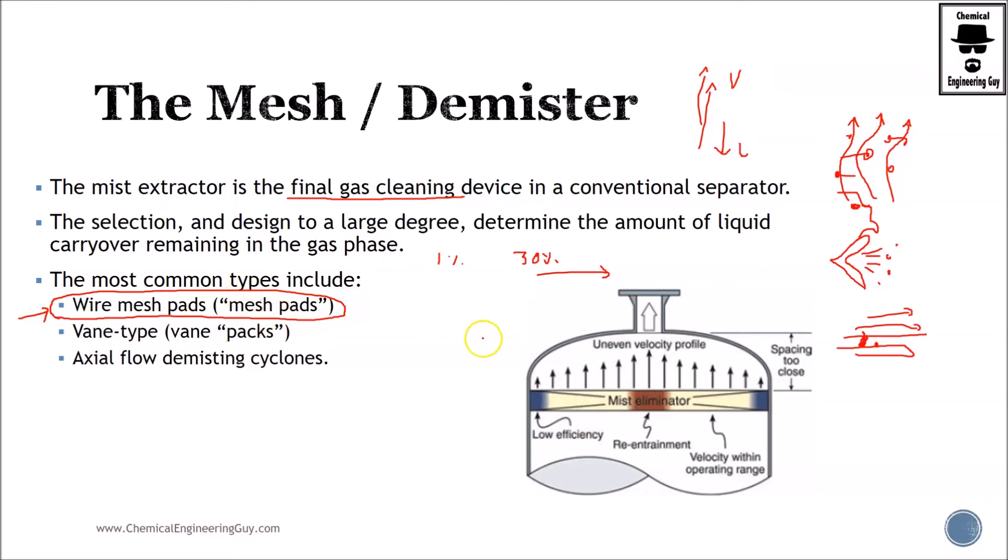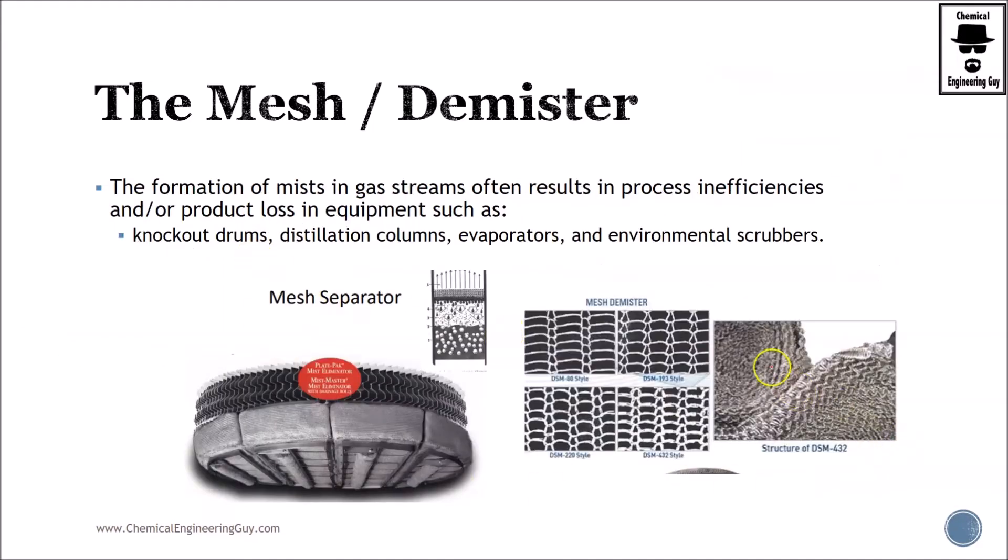The formation of mist in gas streams often results in process inefficiencies. First, you don't want to lose your liquid in the vapor phase. Second, you don't want to have problems in your vapor, especially in the compressor. You may also encounter oxidation, rust, etc., because you are not cleaning your gas properly.